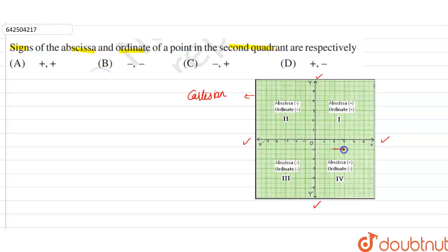On the right hand side, this is positive values of x or positive integers are there. On the left hand side, there are negative values of x.